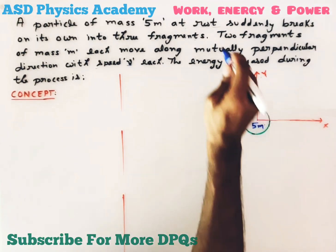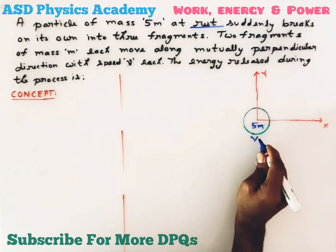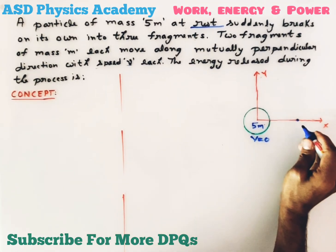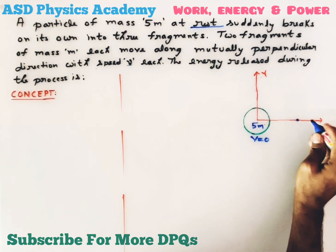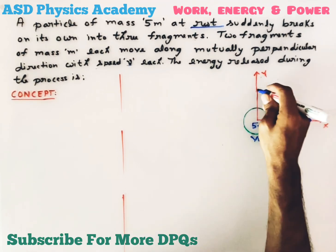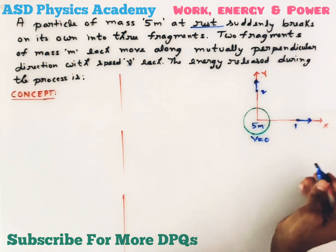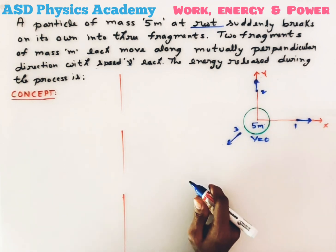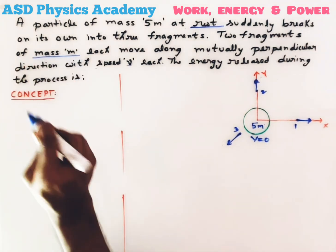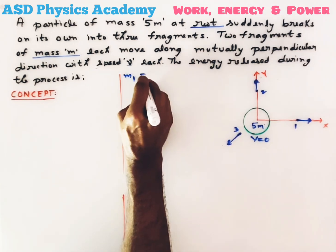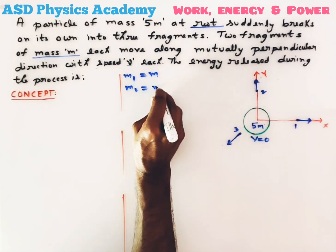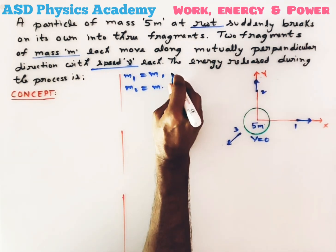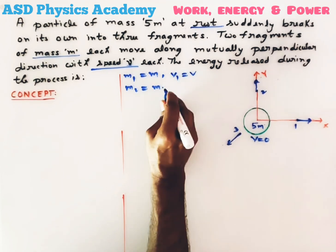According to the question, I have taken one particle of mass 5m at rest — that means v equals 0. This particle is going to break into three fragments. The first two fragments move mutually perpendicular to each other, so let's take the first fragment moves along the x-direction and the second moves along the y-direction. The third fragment — we don't know its direction, so let's take it arbitrarily. The mass of the first two fragments is m, so m1 = m and m2 = m, and the speed of each is v, so v1 = v and v2 = v.